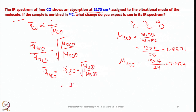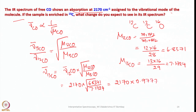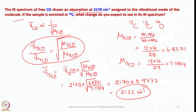Applying the relationship with the given value of 2170 cm⁻¹, the stretching frequency due to ¹³CO drops considerably from 2170 to approximately 2122 cm⁻¹. The key assumption is that the stretching force constant for both ¹²CO and ¹³CO remains more or less unchanged, which allows us to arrive at this relationship.